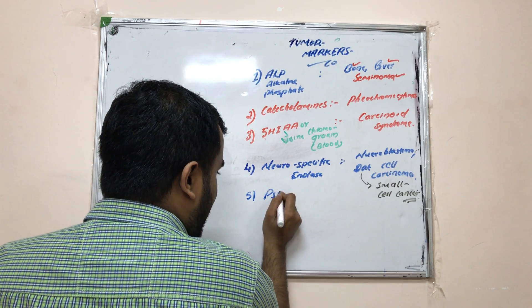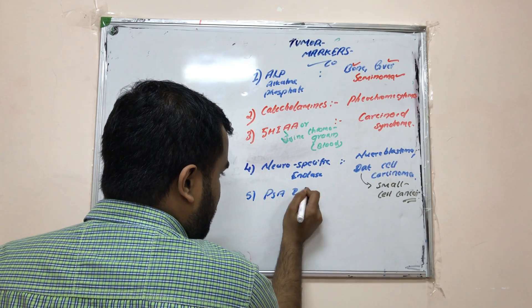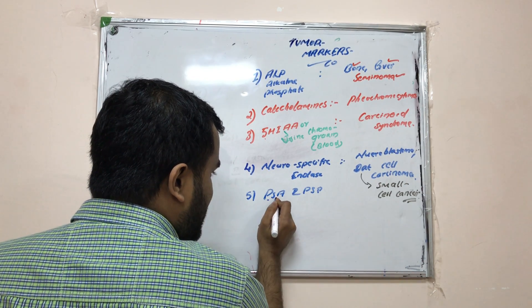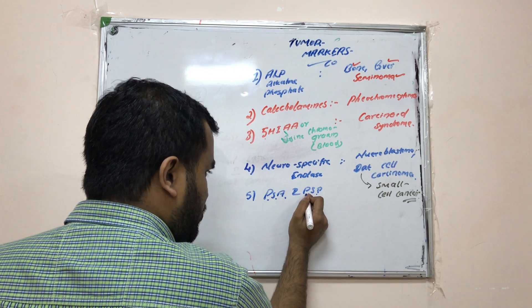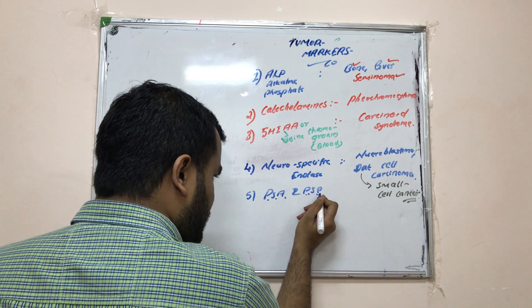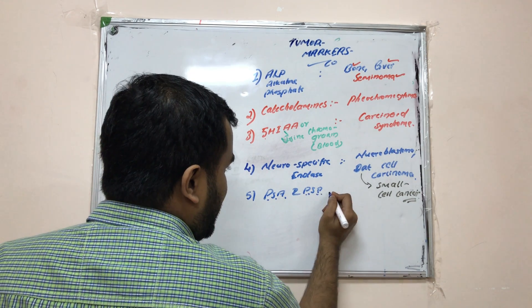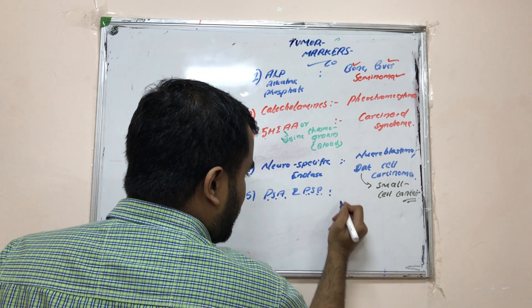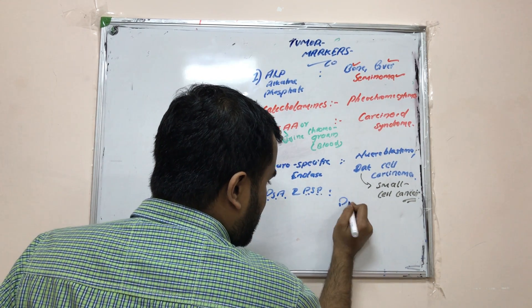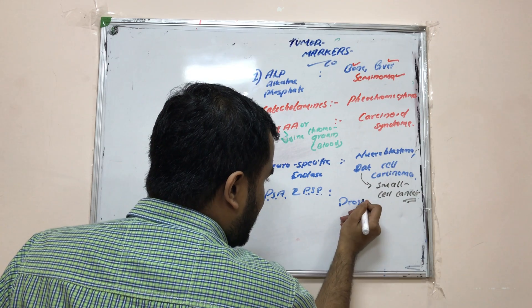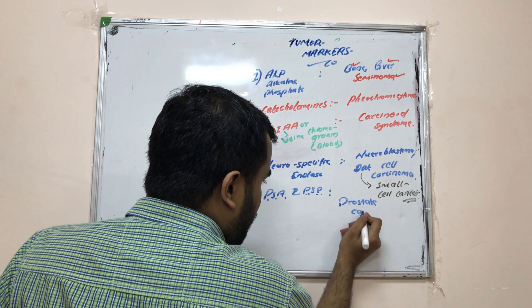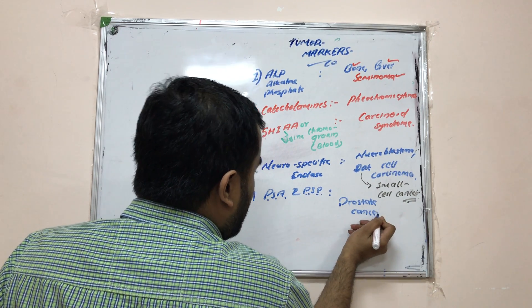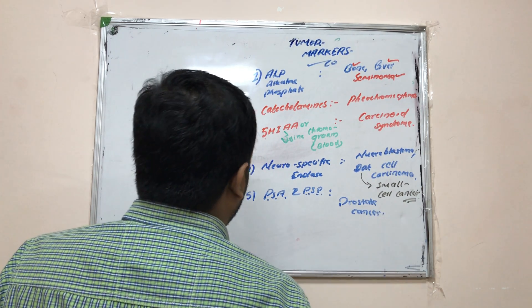PSA means prostate-specific antigen and PSP means prostate-specific protein. Both are markers for prostate cancer, mainly in men after 50 years of age.